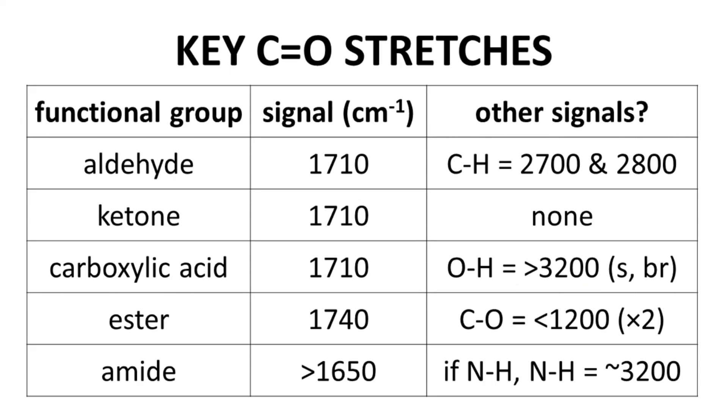What is special about ketones? Nothing. Ketones do not have any other signals. If you have a signal at 1710 but no special CH signals like the aldehyde and no large OH from an acid, then you have a ketone.